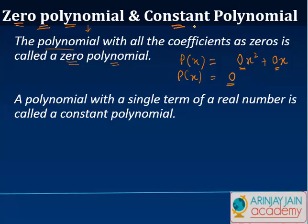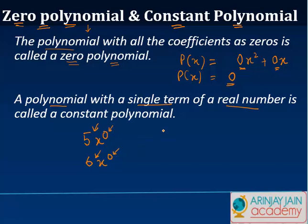As against this, a constant polynomial is a polynomial with a single term of a real number. So if you have a polynomial written as five or six, there is just a single real number, and the degree of x is zero — because five can be written as five times x to the power of zero. This is a polynomial with a single term of a real number, in this case five.